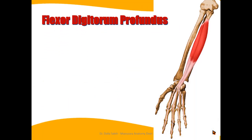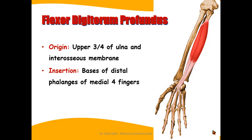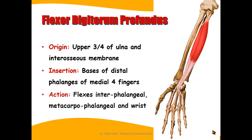The flexor digitorum profundus — 'profundus' meaning deep, because it lies deep to the flexor digitorum superficialis — arises from the upper three-quarters of the ulna and the interosseous membrane. Its insertion is into the bases of the distal phalanges of the medial four fingers. From its name, it flexes the interphalangeal and metacarpophalangeal joints and also the wrist.